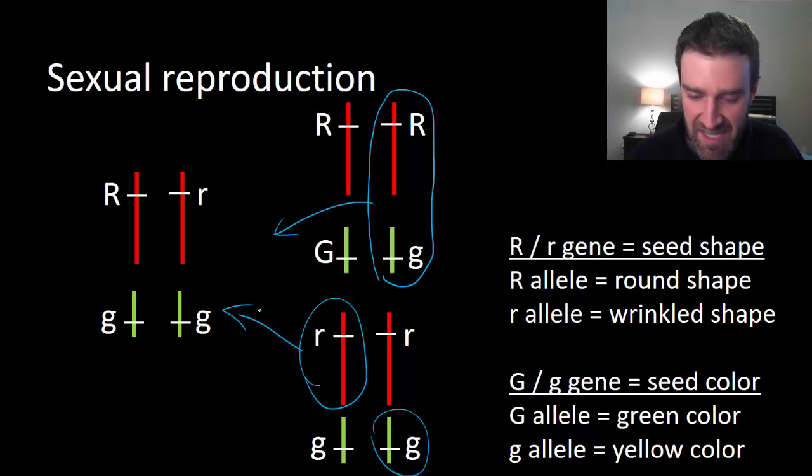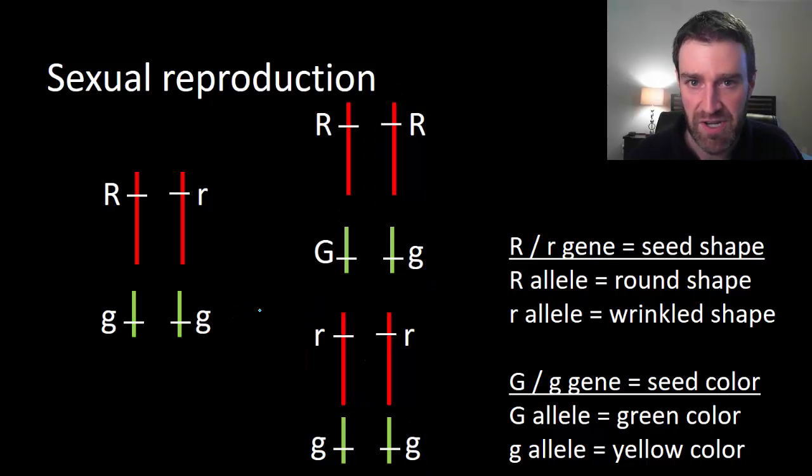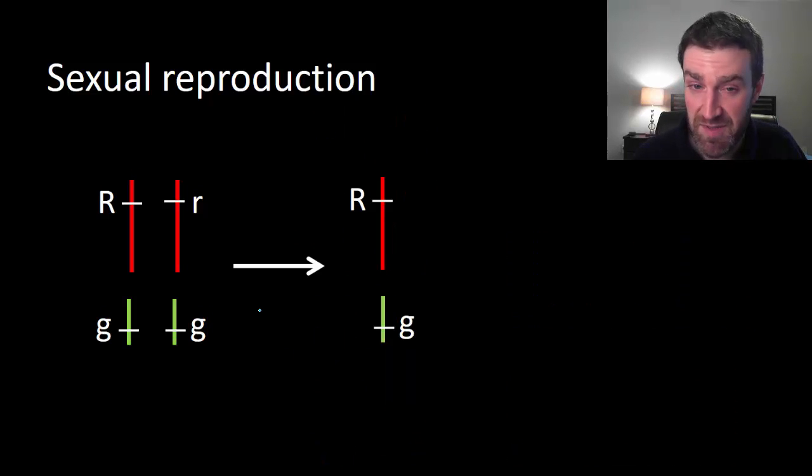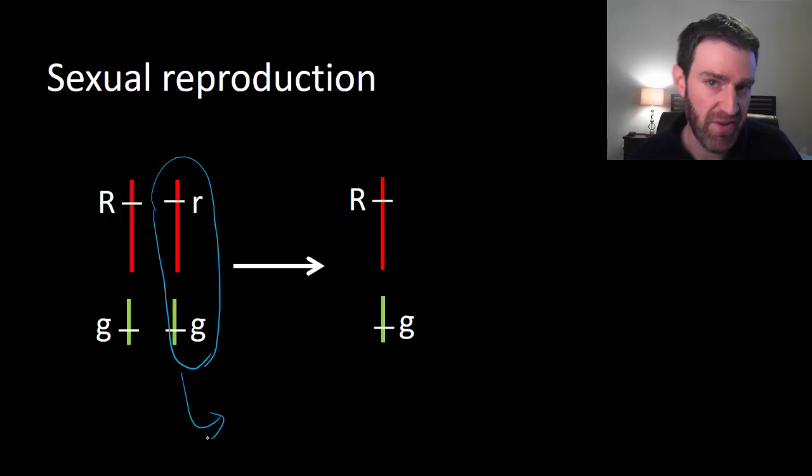What's really important about this again is that as parents, you might pass on a different half of yourself every time, and that's what really mixes things up in the next generation with sexual reproduction. Maybe if this organism itself goes on to reproduce, it could pass on this half of itself. Maybe if it reproduced again though, it might pass on this half of itself instead to another offspring.